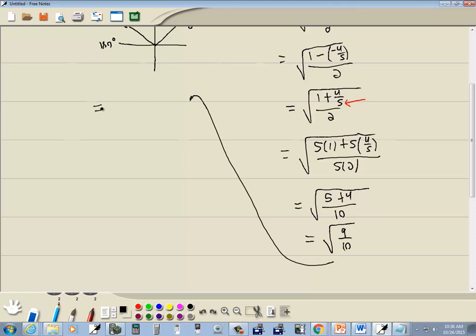Now we can't have a fraction inside of a radical so we'll split this up. We'll put square root around the top, square root around the bottom.